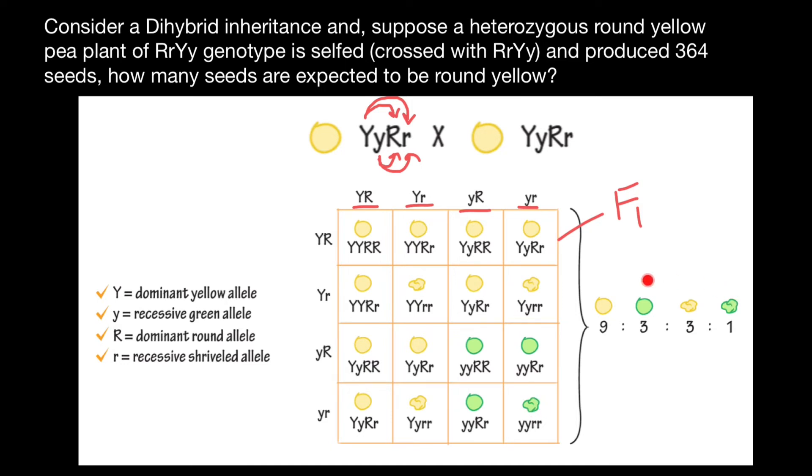And here's the ratio. For example, in the progeny, we have nine which is going to be round and yellow. Let's count: one, two, three, four, five, six, seven, eight, nine. Nine out of 16. So four by four would give us 16. Nine plus three plus three plus one would give us 16. So out of 16, nine are going to be round and yellow.